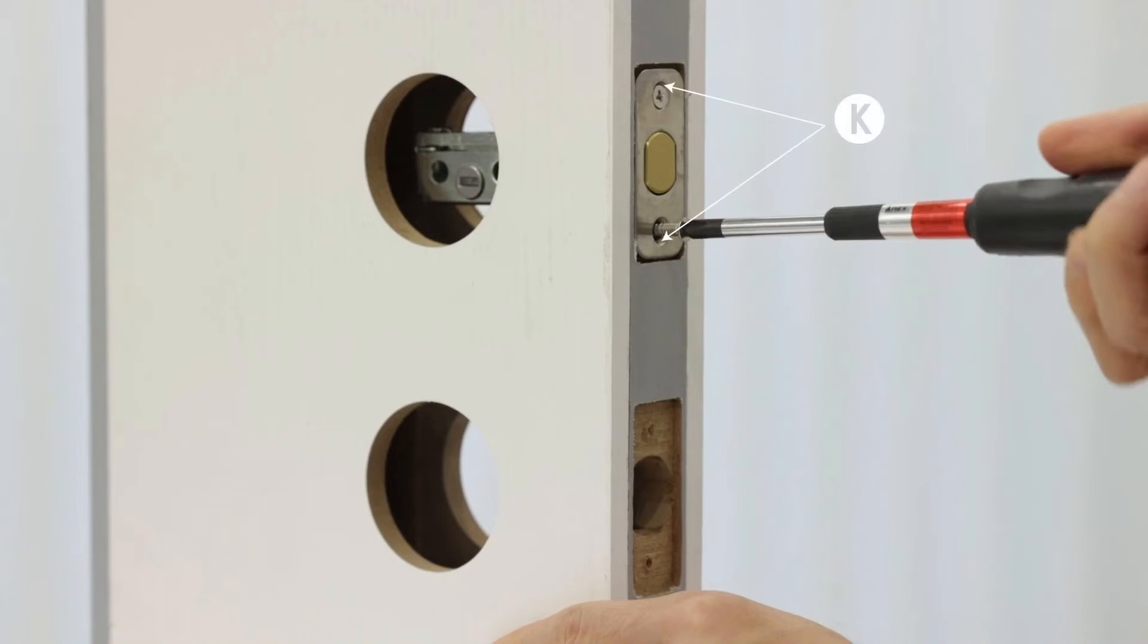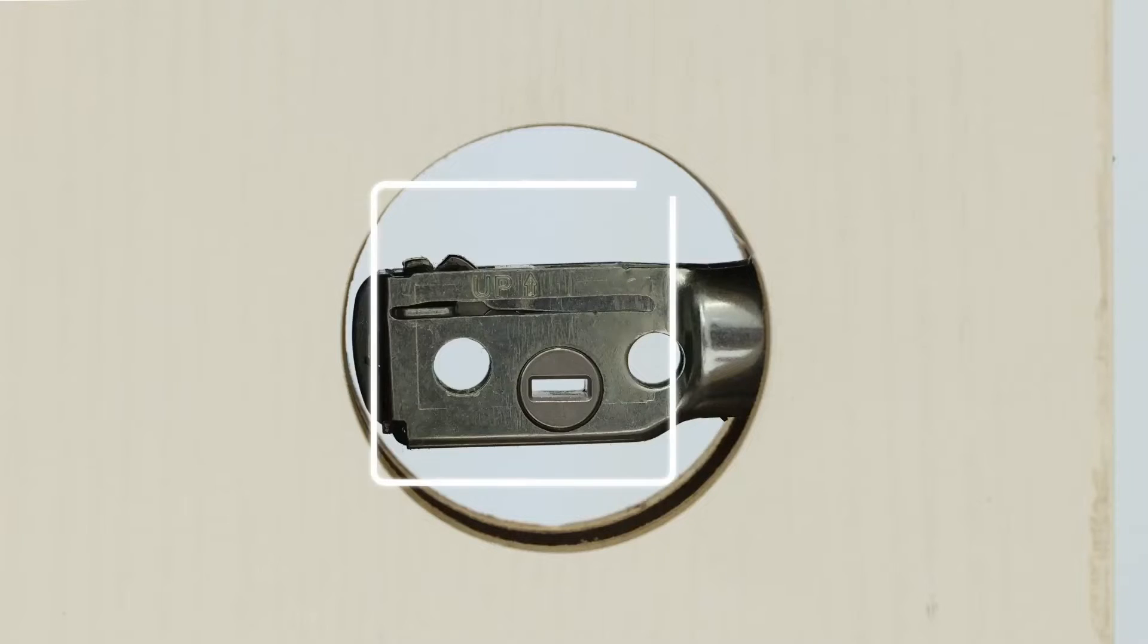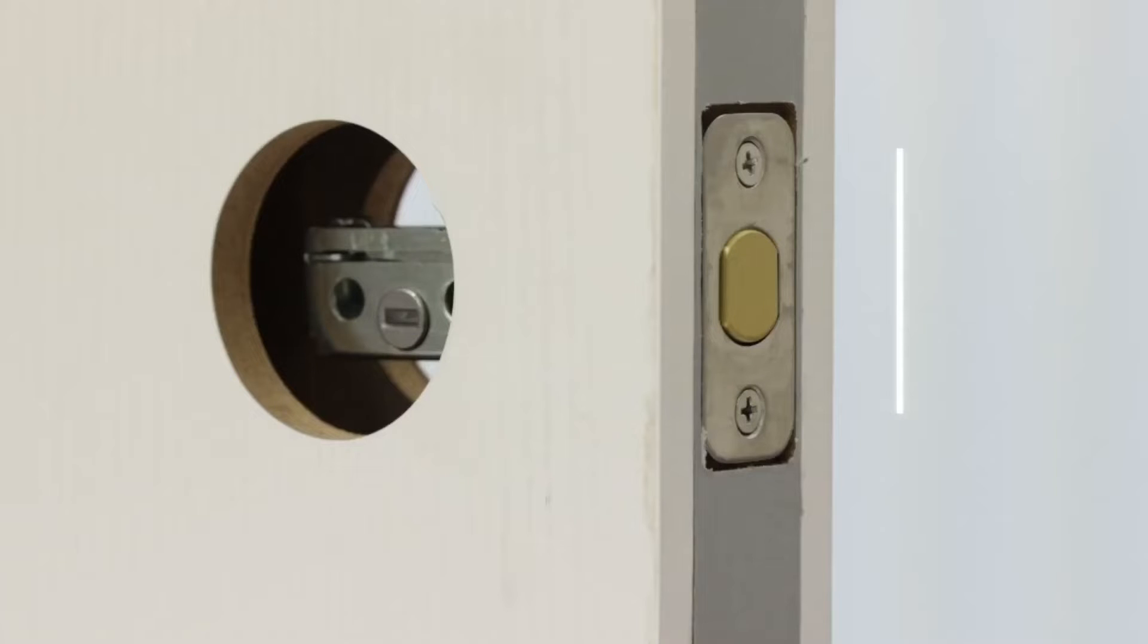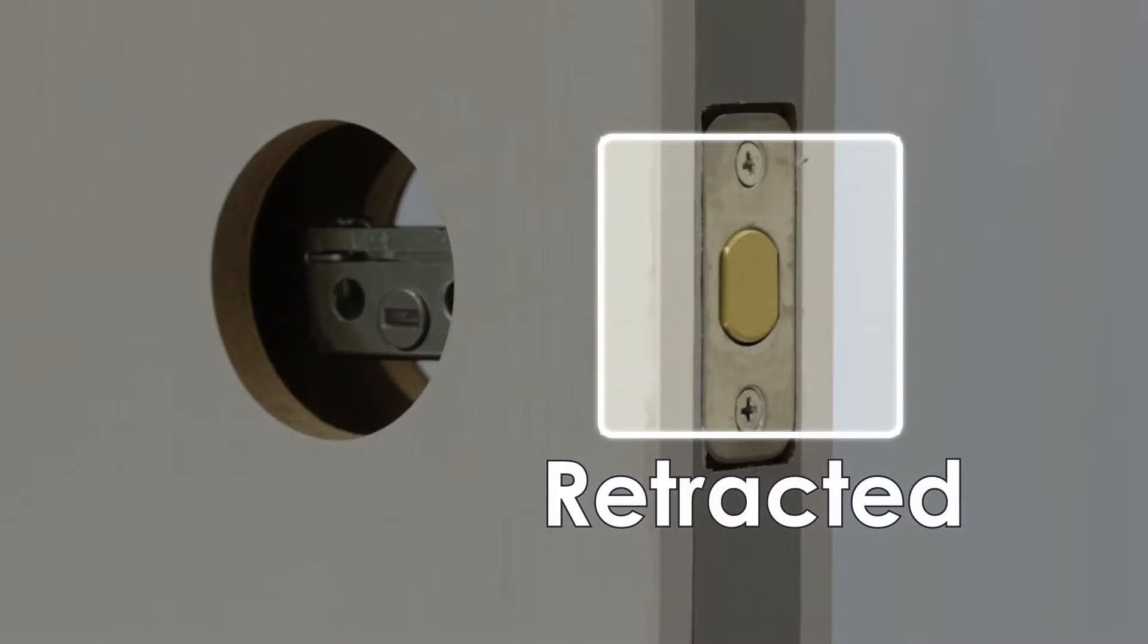Attach the deadbolt into the top door hole using two screws K. Make sure that the right side is up and the slot is in the horizontal position. Ensure the deadbolt is retracted before you proceed.